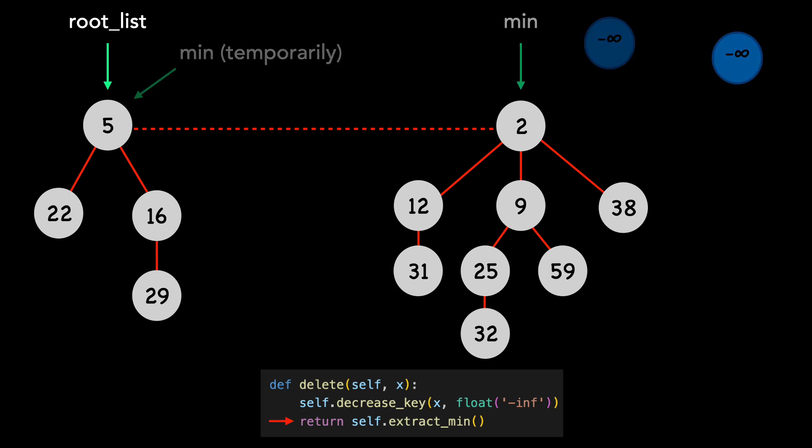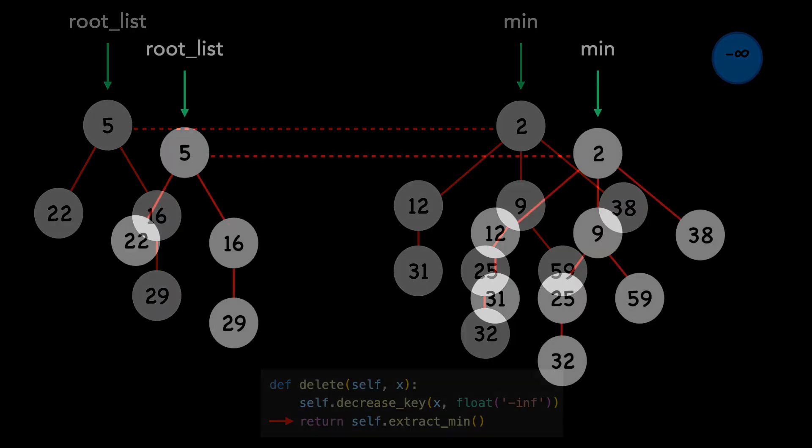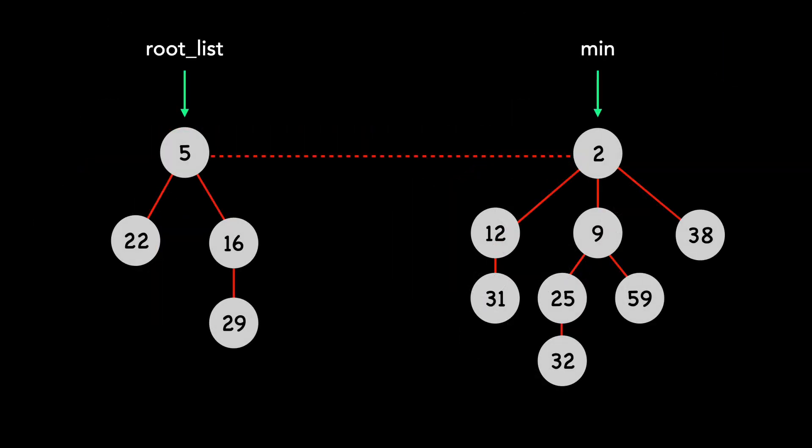We set the new min to point to 2. We finish deleting node 19 from the Fibonacci heap. First, we decrease its key to negative infinity, and then we extract the minimum. You'll also notice that we have no violations in our min heap order trees. This is because delete calls decrease key, which fixes any violations with the cut and cascading cut methods.